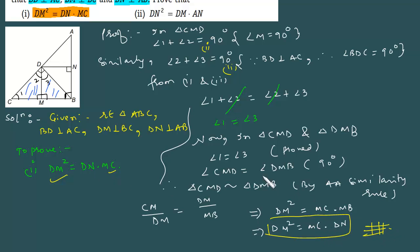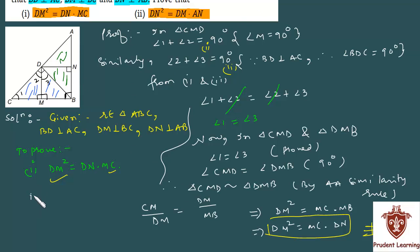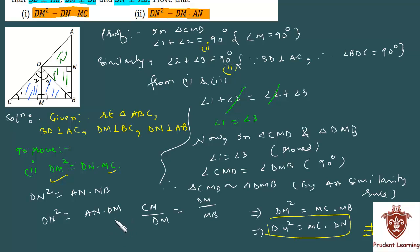We have proved the first part. For the second part, try it yourself following the same sequence of steps. Consider triangles NDB and NDA. Prove the two triangles are similar, then identify the rectangle to show that DN squared equals AN multiplied by NB.